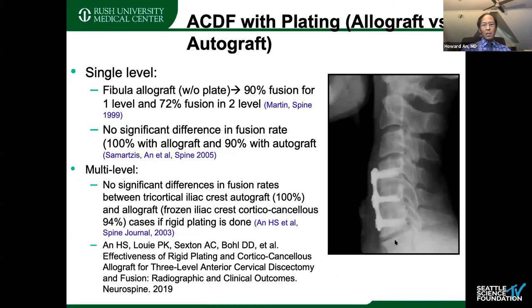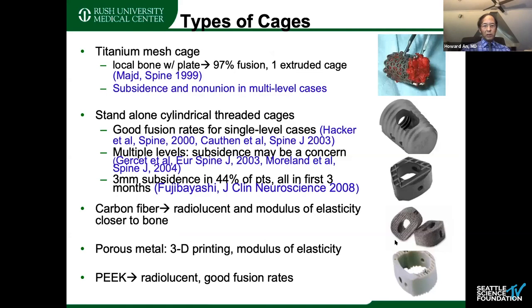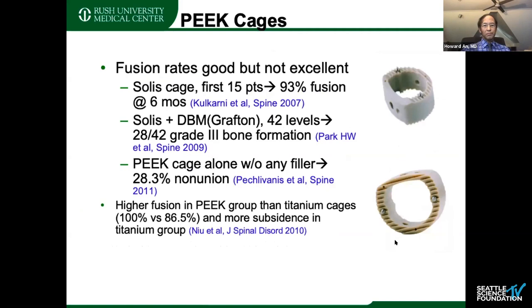In terms of what implant to use, there are many options including PEEK cages and now 3D titanium implants. My favorite interbody spacer is still corticocancellous frozen allograft — I really have not had too many failures, whether it's one level, two level, or even three level. We recently published over 90% fusion rate at all levels if you do good carpentry with good fixation with plate and screws. I'm sure you have your own favorites, and improvement of cage design will also improve the fusion rate as well.